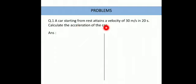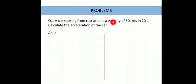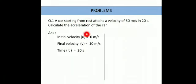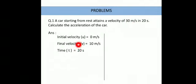Depending on acceleration, we can see that if the car has very high acceleration, it will take less time to reach that speed. So first of all, what is given in the question? The car is starting from rest, so initial velocity is 0. In 20 seconds it attains a velocity of 30 meter per second. So this is the final velocity — the second position of the car.